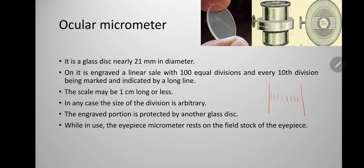While in use, the eyepiece micrometer rests on the field of the eyepiece. The scale runs from 0 to 100, with markings at every 10th division — so 0, 10, 20, and so on up to 100.